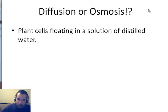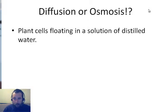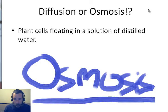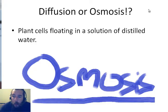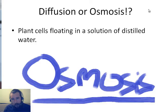Plant cell floating in a solution of distilled water. That's right, it's osmosis. There is nothing in distilled water but water — what could possibly diffuse through? It can't be anything, it's osmosis.